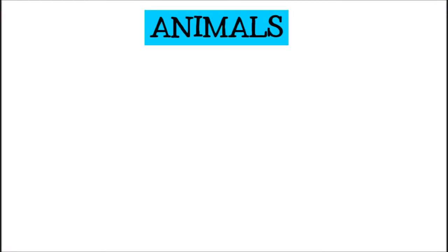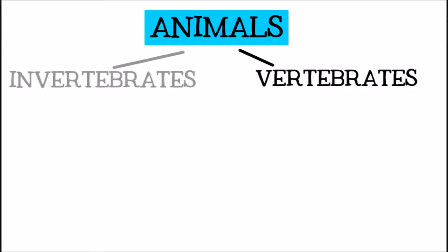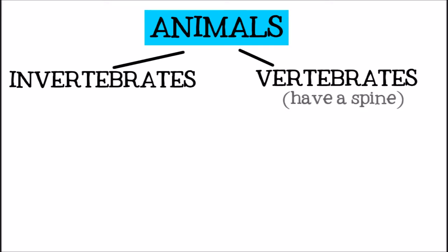The two largest groups of animals are vertebrates and invertebrates. Vertebrates are animals that have spines or backbones. Invertebrates are animals that do not have backbones.